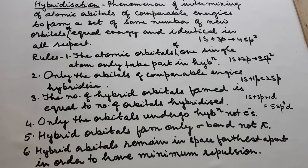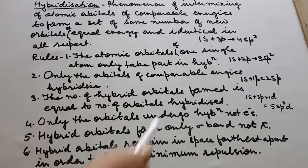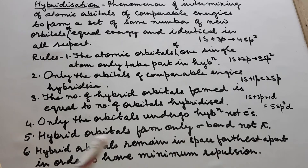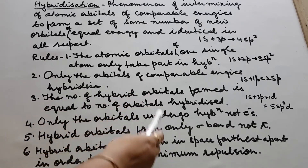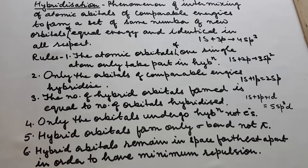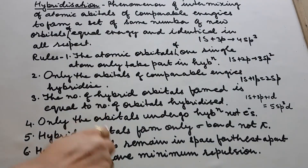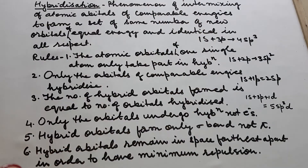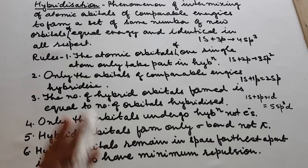Like ammonia, it is N. Like water, it is O. Like methane, it is C — carbon. Likewise. Second point: only the orbitals of compatible energies hybridize — only those orbitals combine which have nearly the same energy, compatible energies. The number of hybrid orbitals formed is equal to the number of orbitals hybridized. If 1s and 3p combine, they give rise to four sp3 — the number of orbitals hybridized is equal to the number of orbitals formed, always exactly equal.